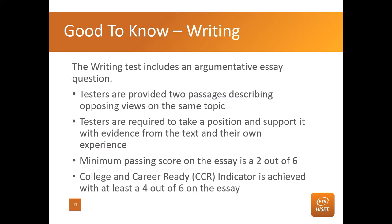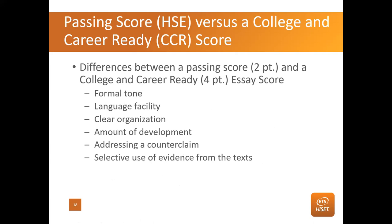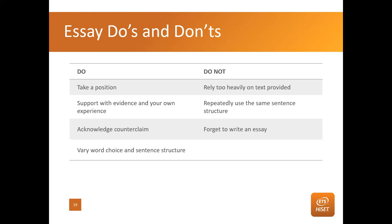Let's recap. You get two passages describing opposing views on the topic. You take your position and support it with evidence from the text and your own experience. The main difference between a two and a four is: formal tone, language facility, organization, development, counterclaim, and selective use of evidence. That counterclaim has already been pointed out to you in the instructions. Make sure you take a position, support it with evidence from your own experience, acknowledge the counterclaim, and don't forget to vary your word choice and sentence structure.